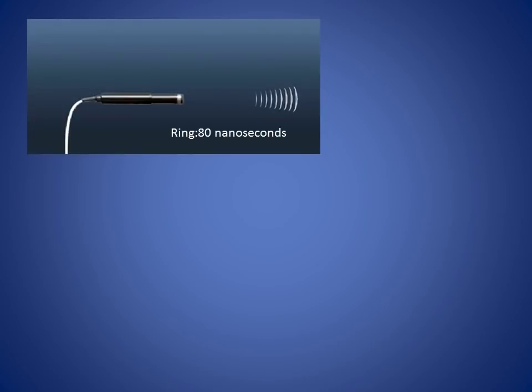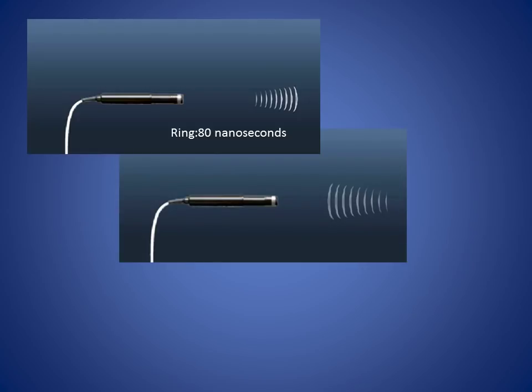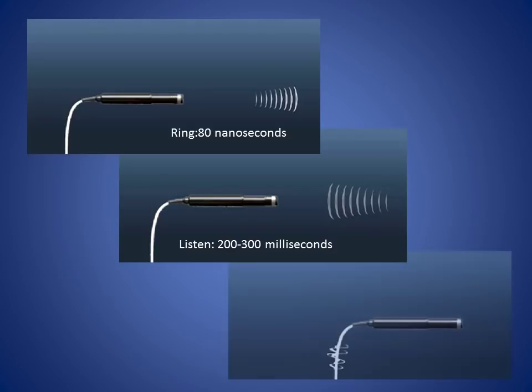In an ultrasound probe, a rapidly alternating electric field is passed across an array of crystals, causing them to vibrate and emit a high frequency sound wave. When the current is switched off, reflected sound waves or echoes cause the crystals to vibrate, producing electricity. This electrical signal is then processed by the ultrasound machine to produce an image.